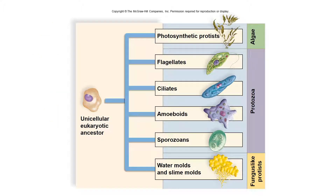Here are the six different categories for protists. We have photosynthetic protists like algae, and then we have protozoans, which are the flagellates, ciliates, amoeboids, or the sporozoans. And then we have the fungus-like protists, which are your slime molds and your water molds. They think that all of these different categories of protists came from one eukaryotic ancestor.